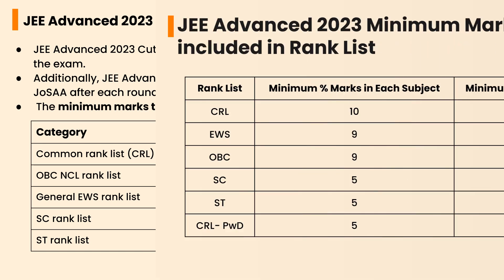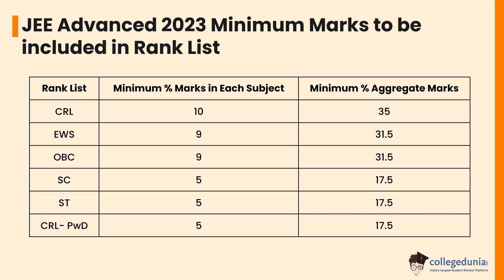Let's check the JEE Advanced 2023 minimum marks to be included in the rank list. To be included in the common rank list, 10% minimum marks are required in each subject and minimum 35% aggregate marks are required. In EWS and OBC, 9% minimum marks are required in each subject and minimum 31.5% aggregate marks are required. In SC, ST and CRL-PWD, 5% minimum marks are required in each subject and minimum 17.5% aggregate marks are required.